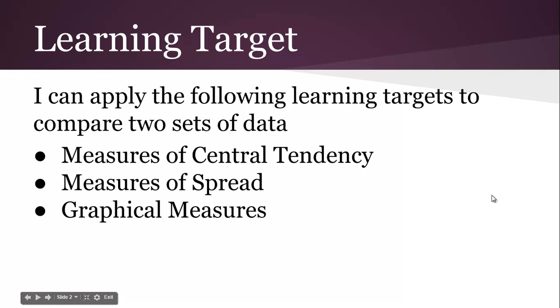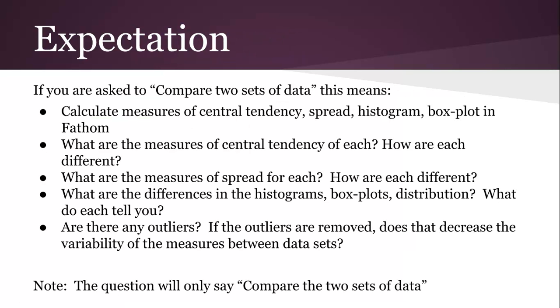You can apply the learning targets to compare two sets of data. If you're asked to compare two sets of data, this means calculate measures of central tendency, spread, histogram, box plot, and fathom. What are the measures of central tendency of each? How are they different? What are the measures of spread for each? How are they different? What are the differences in the histograms, box plots, distribution? What do each tell you? And are there any outliers? If the outliers are removed, does that decrease the variability of the measures between the data sets? And the question will only say, compare the two sets of data.